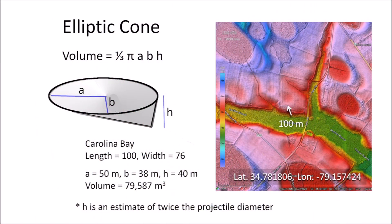The Carolina Bays have elliptical geometry, and since ellipses are conic sections, it is reasonable to propose that the bays originated as conical cavities that can be represented as elliptic cones. The volume of an elliptic cone is one-third pi times the semi-major axis times the semi-minor axis times the height. However, the height of the elliptic cone corresponds to the depth of the cavity, which is unknown.